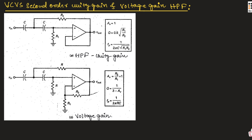The first circuit is known as a high pass unity gain circuit because the gain will be unity. Since in the feedback we are not connecting any resistors, it will be acting as a voltage follower. That's why the voltage gain will be equal to 1, hence it is known as unity gain.